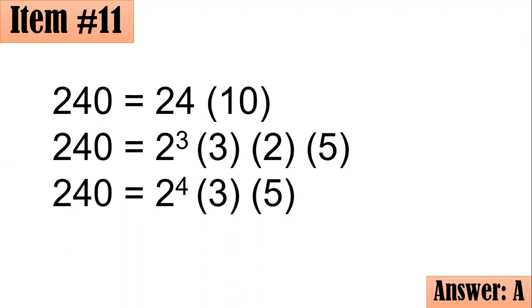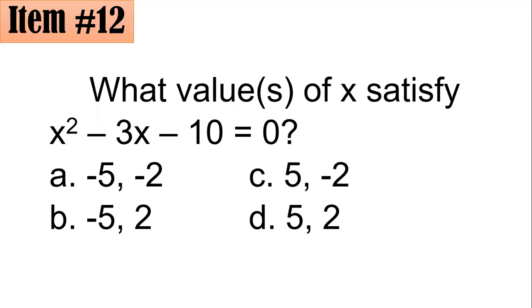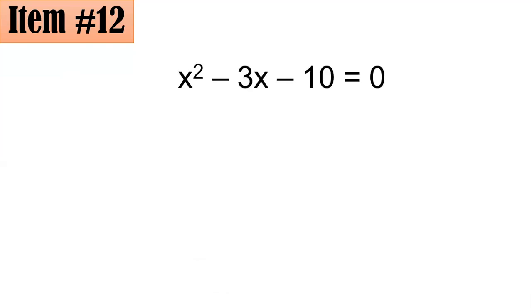Number 12. What value or values of x satisfy x² - 3x - 10 = 0? Is it negative 5, negative 2; negative 5, 2; 5, negative 2; or 5, 2? We could approach this through factoring. If you factor x² - 3x - 10 = 0, you could see that it's the product of (x + 2) and (x - 5) equating that to 0. Remember, we have the zero property of multiplication. If these two factors whose product equals 0, then either the first or the second is equal to 0.